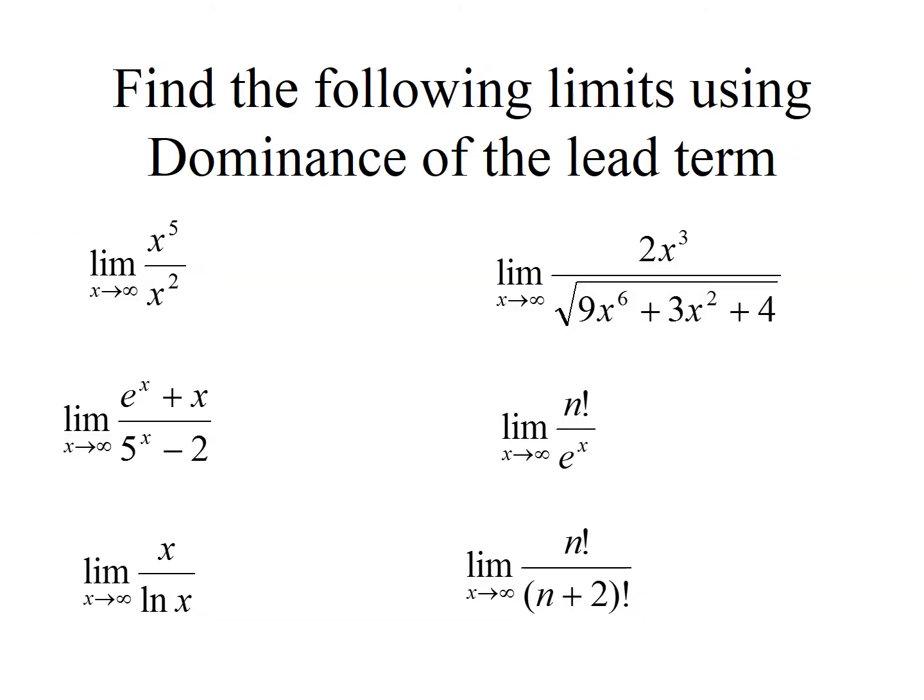Let's take a moment and find the limit of the following expressions using dominance of the lead term. Now in this first example, notice that x to the fifth grows faster than x squared. So because the numerator grows faster than the denominator, the limit as x approaches infinity would be infinity, simply because this grows faster than this.